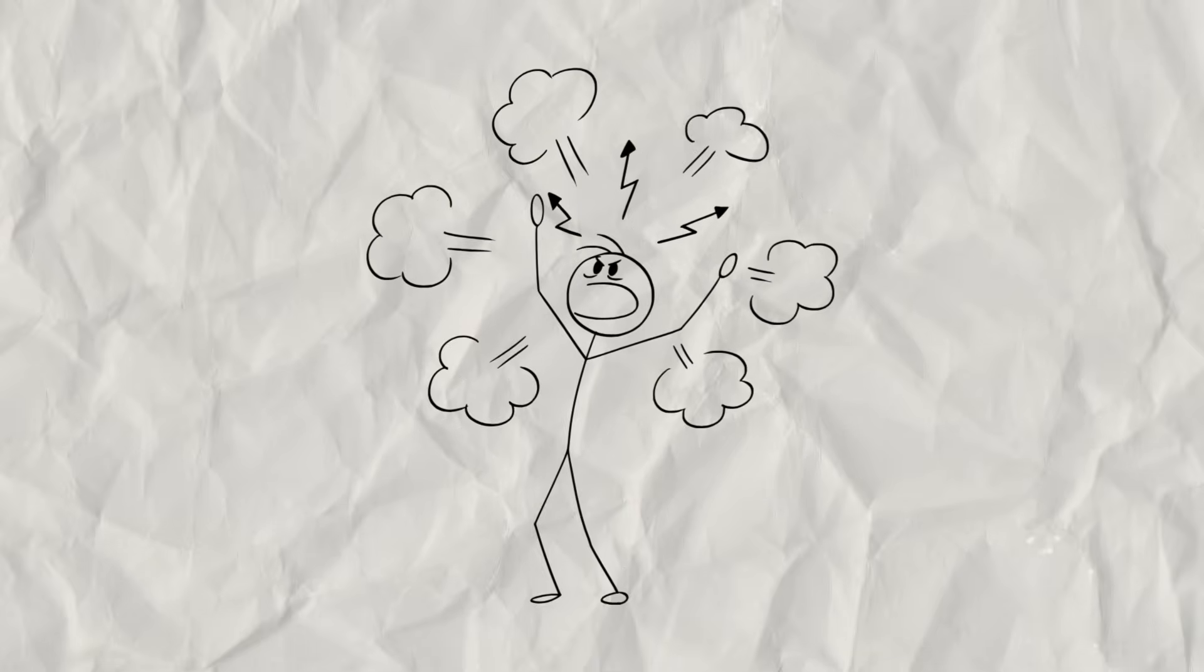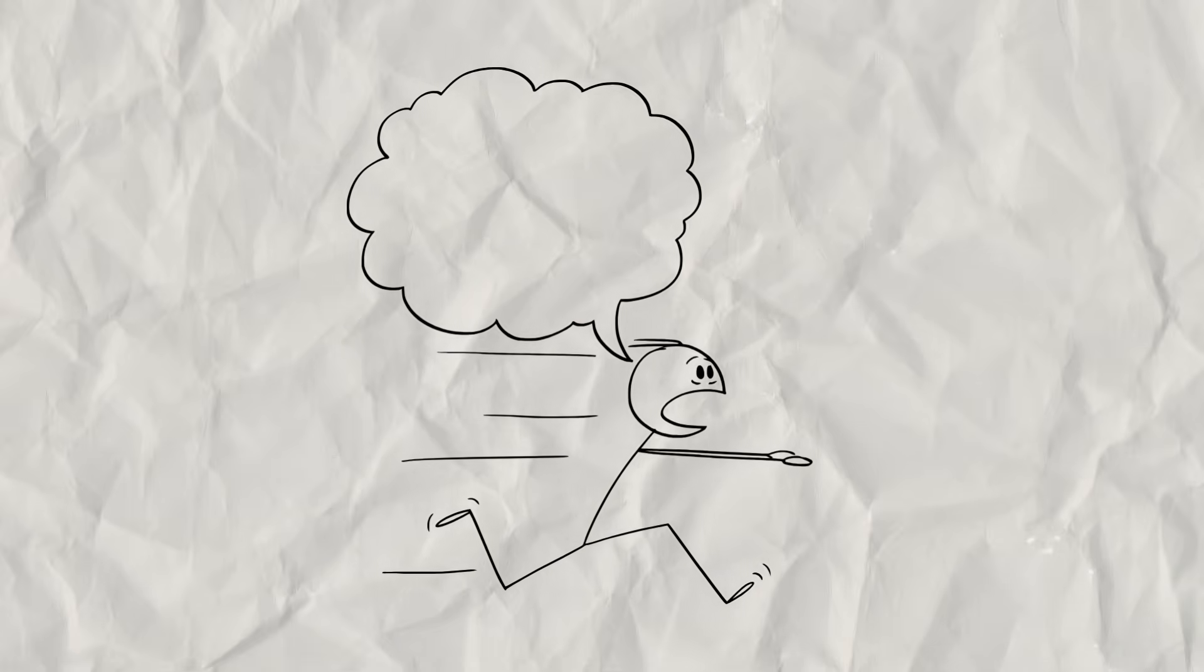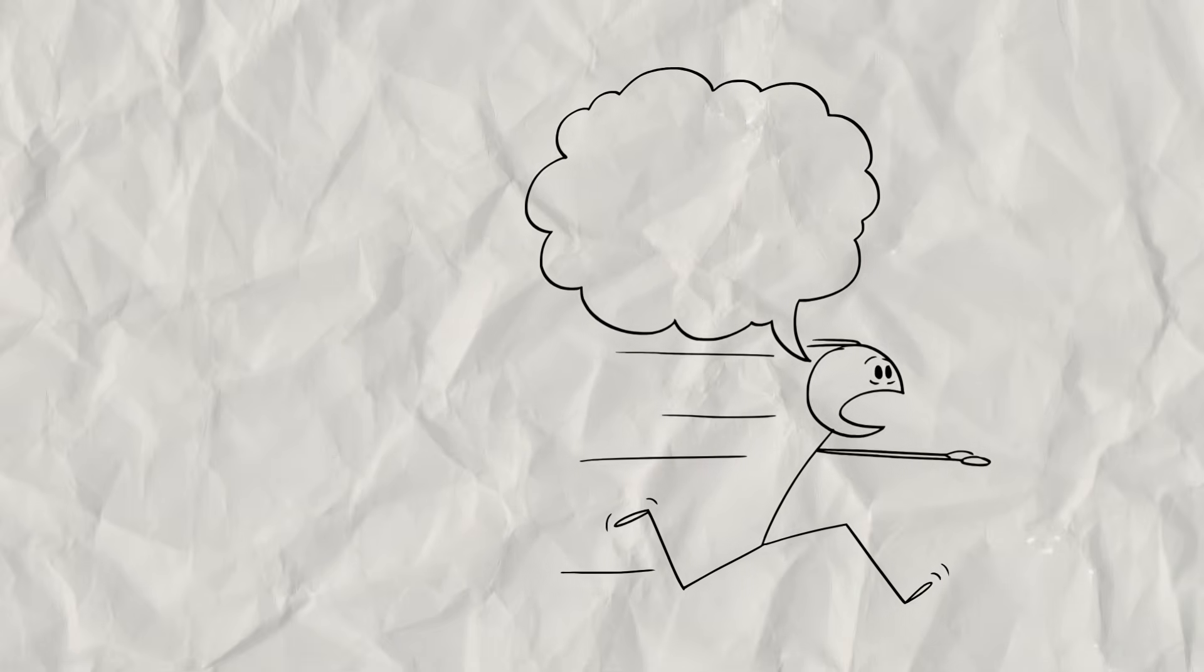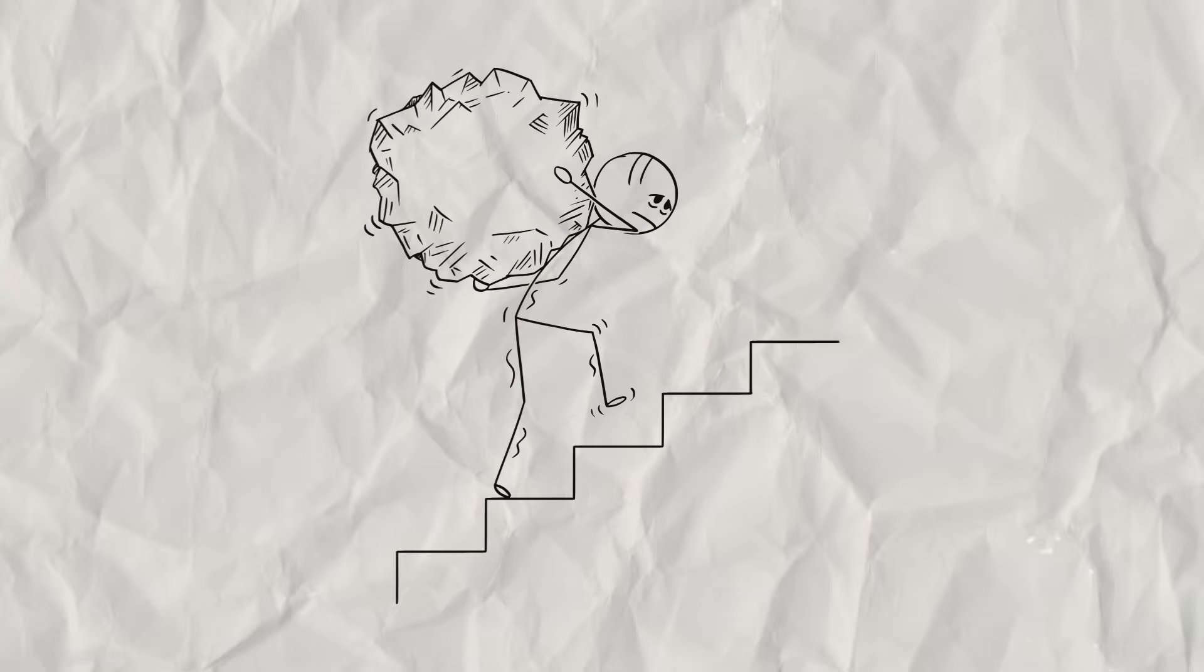You might logically know you're safe, but your amygdala is screaming that you're not. This creates a constant, low-level hum of anxiety. A state of being always on guard, waiting for the other shoe to drop. Your body is keeping a score it was never meant to hold. Number 2.